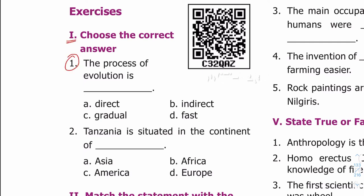First question: the process of evolution is dash. Option C: gradual. Second question: Tanzania is situated in the continent of dash. Option B: Africa.